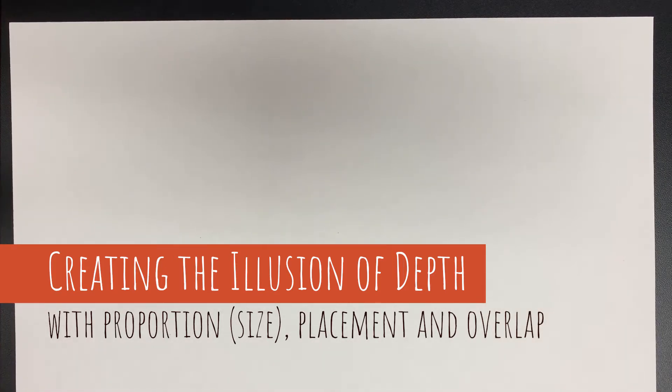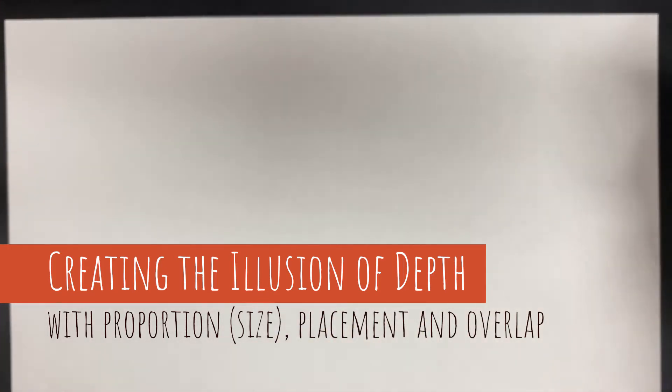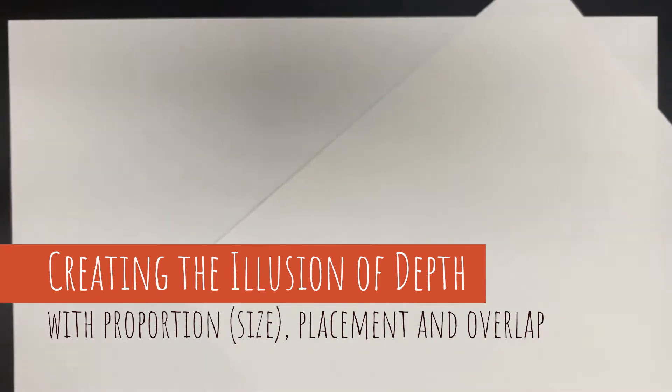All right, hey you guys, we are going to be talking about how to create depth or the illusion of depth in a work of art. When it comes to creating the illusion of depth, what that really means is we are using a 2D piece of paper to make something look 3D. So when people look at our artwork on this 2D piece of paper, we are going to be giving the illusion or tricking their eye into thinking that they are looking at a scene that is real.